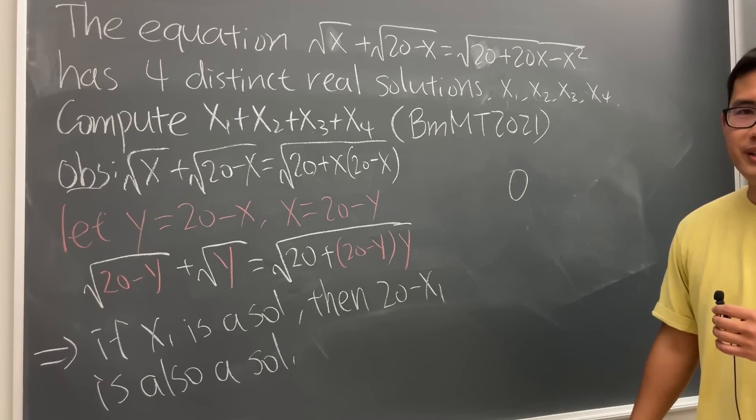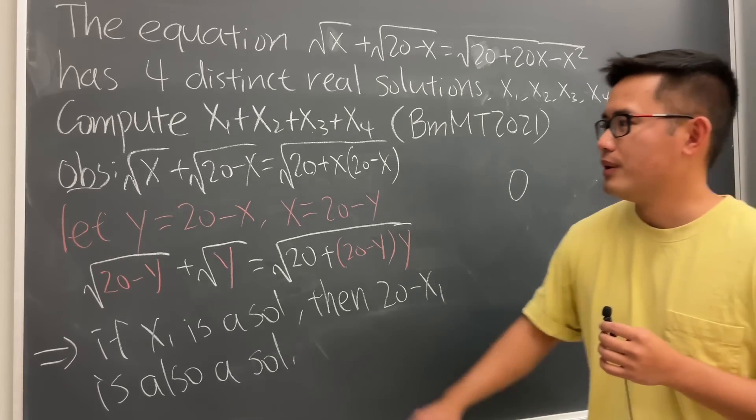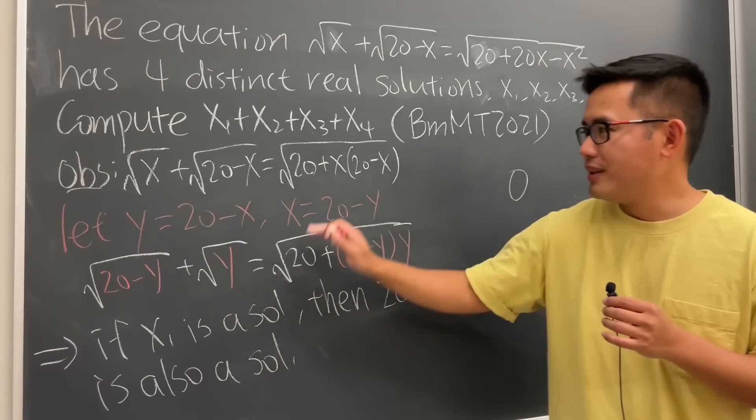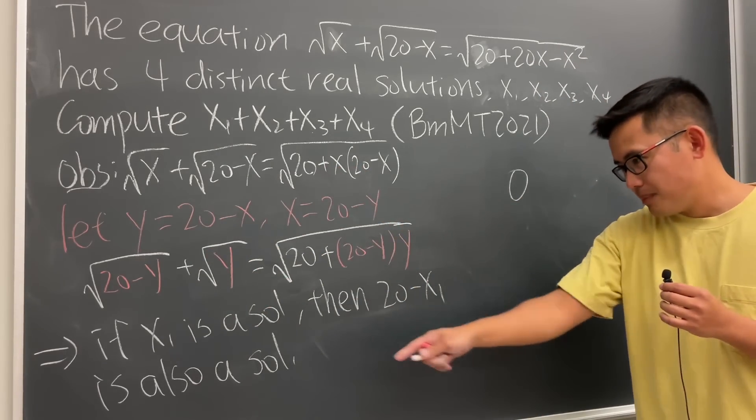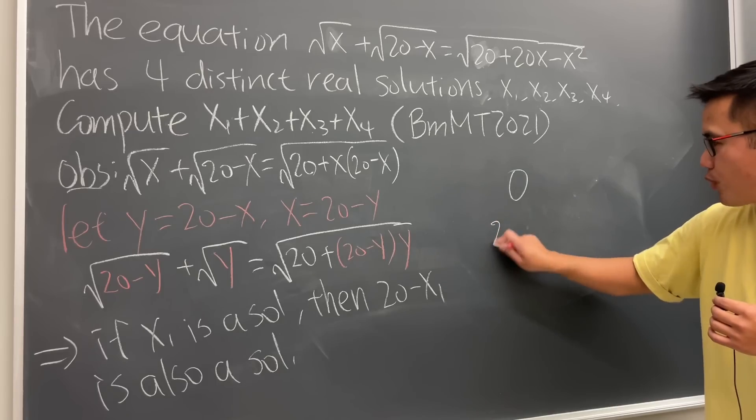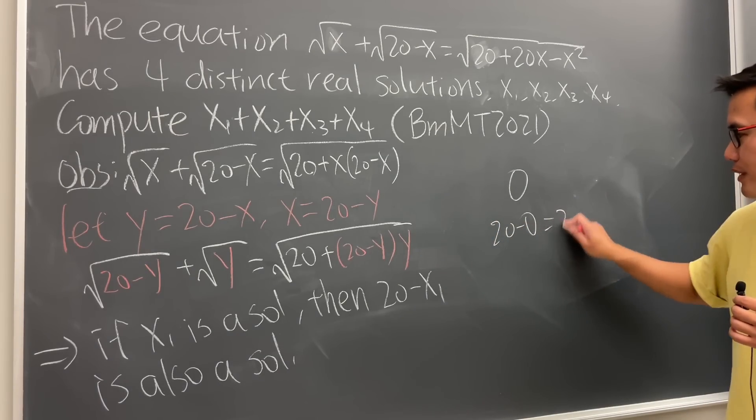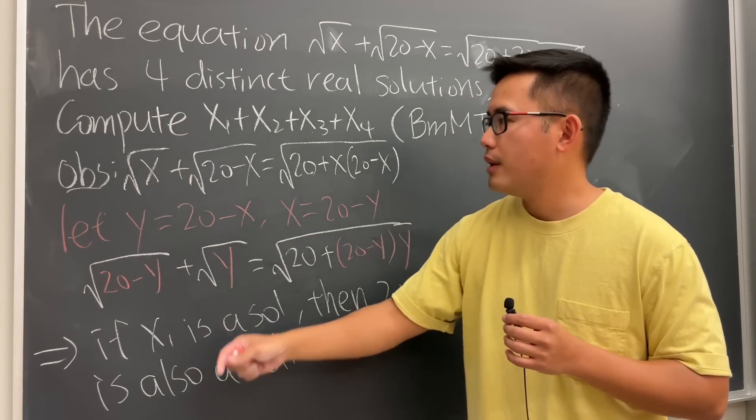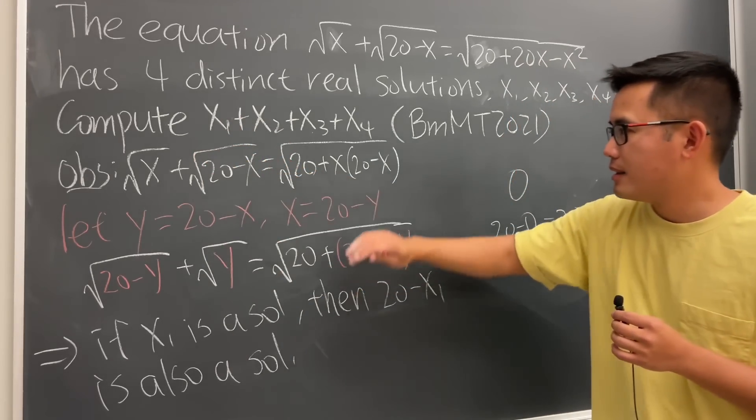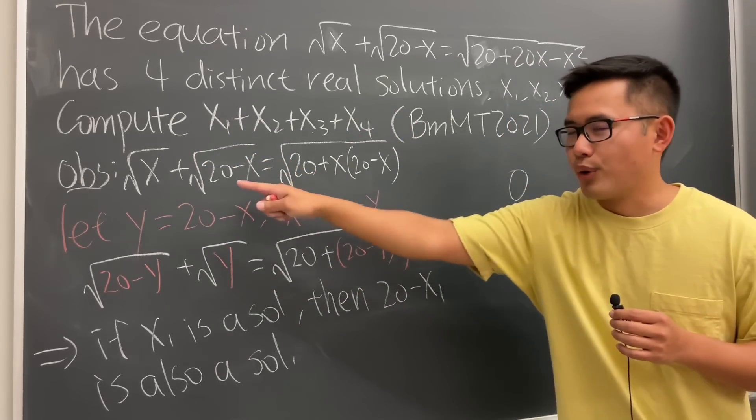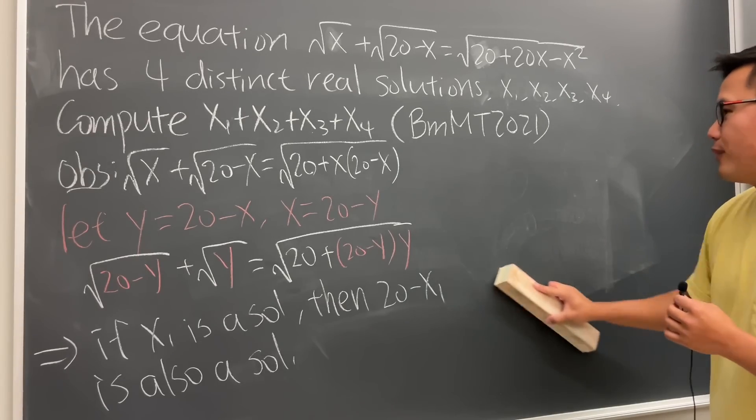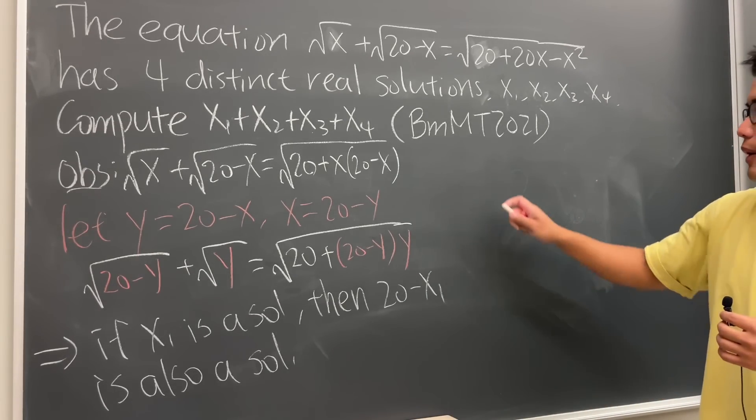For example, 0 is a solution. Because if x is equal to 0, this is gone, this is gone, this is gone. Square root of 20 is equal to square root of 20. But based on what we said, that means 20 minus 0, which is just 20, is also a solution. Because if we put 20 here, put 20 here, that will be gone, that will be gone. Square root of 20 is equal to square root of 20. So these are the two solutions, right? But of course, the other two are the harder ones. But I'm doing away, though.